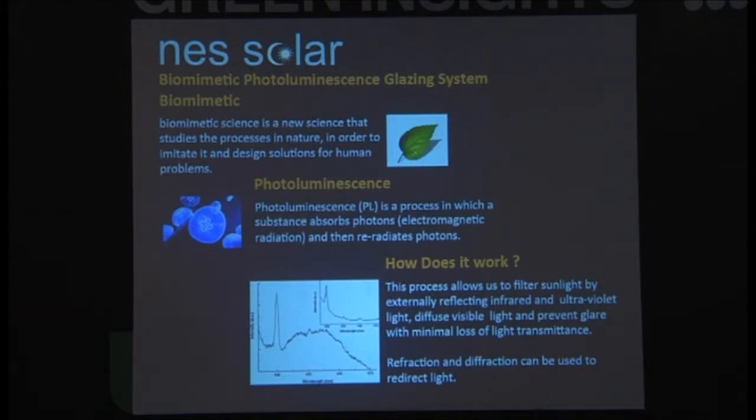So it's photoluminescent, basically because it absorbs the electromagnetic radiation. So the process allows us to filter the sunlight by externally reflecting the infrared and the ultraviolet light. We diffuse the light, so we scatter it, so we don't get glare. So we don't need sunglasses. And we get minimal loss of transmittance of light. Refraction and diffraction is then used to actually throw the light up onto the ceiling. So when the light comes from the ceiling, it's more natural. It's like light coming from the sun, rather than light coming directly through a window.